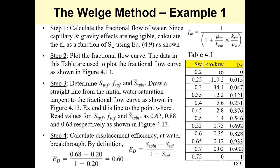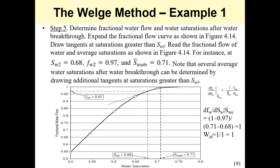To calculate the microscopic displacement efficiency, the formula is (SWBT minus SWI) divided by (1 minus SWI). SWBT is the average water saturation behind the front obtained by extending the tangent to fw equals 1, and SWI is the initial water saturation. This gives a displacement efficiency of 0.6.